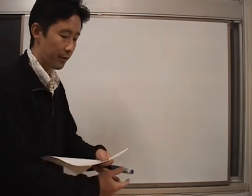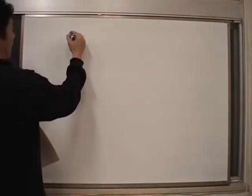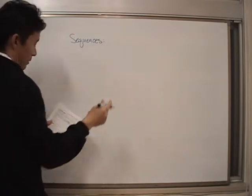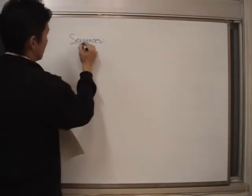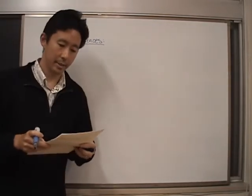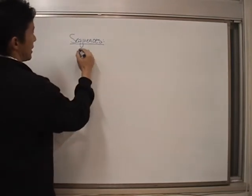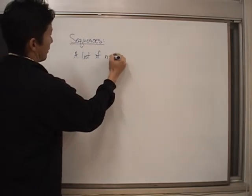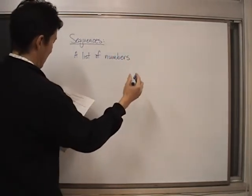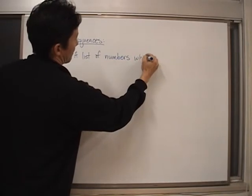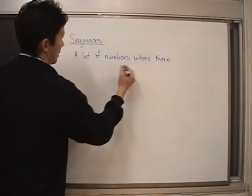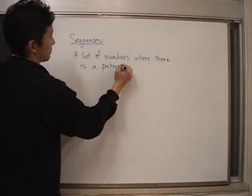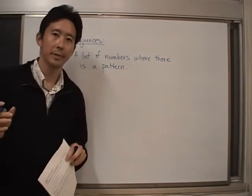So let's start off first with what sequences are. What is a sequence? A sequence is a list of numbers where there is a pattern. That's what a sequence is.